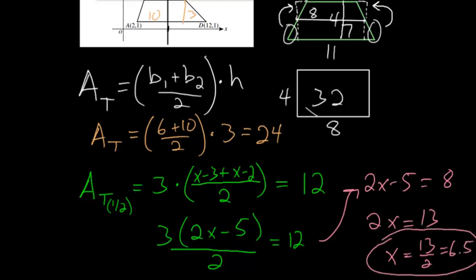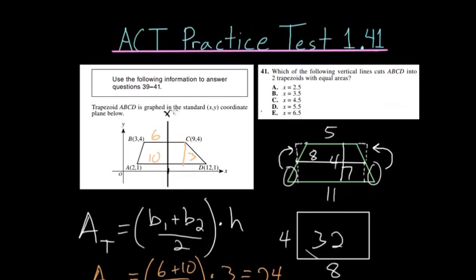So if we split our trapezoid with the line x is equal to 6.5, then it would exactly cut both of these trapezoids into the same area. So choice letter E here is the final answer.